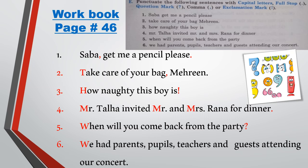The last sentence is: 'We had parents, pupils, teachers, and guests attending our concert.' The first letter W will be capital and a full stop is already at the end. Dear students, do this exercise with the help of your colored pencils.